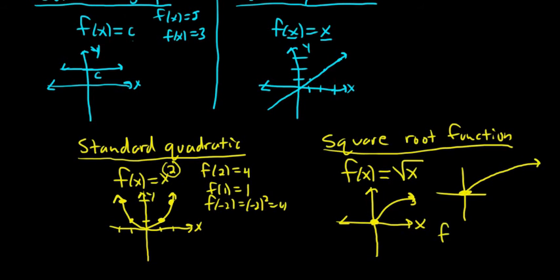For example, if you plug in 4, you get the square root of 4, which is 2. And if you go all the way out to 100, you plug in x equals 100, you only get 10. So when x is 100, you're still only at 10. So it grows very slowly.